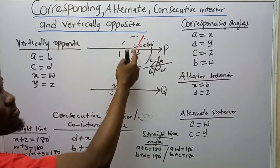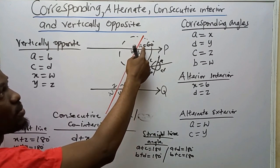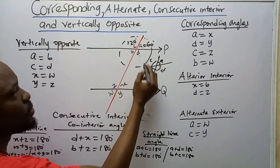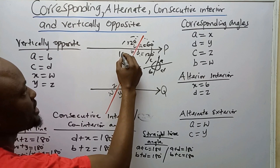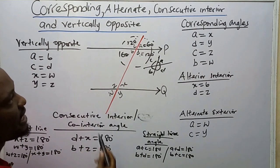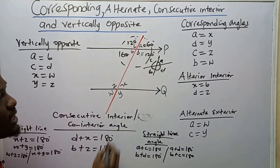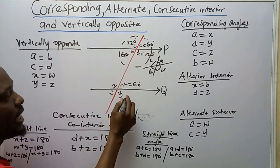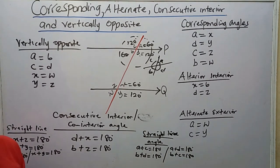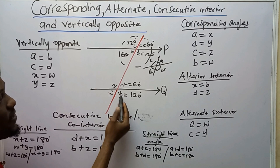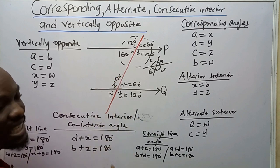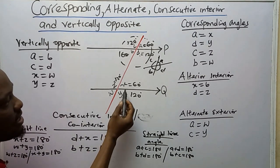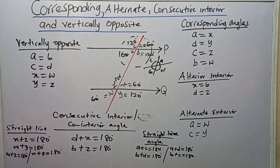This is a straight line — sum of angles on a straight line is 180 degrees. If I subtract 60 from 180 I get 120, so this angle is 120 degrees. Since these are intersecting lines, the vertically opposite angle D will also be 120 degrees, and B will be 60 degrees — vertically opposite. If I want to get X, this line and this line are corresponding, so since A is 60 degrees, X is also 60 degrees. D is 120 here, so Y is also 120 degrees — they are corresponding angles. Z is 120 degrees because X and Z are vertically opposite angles. And W is also 60 degrees — vertically opposite to X.